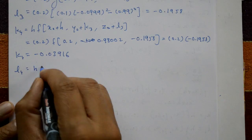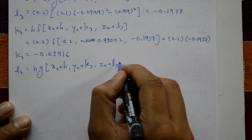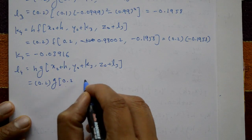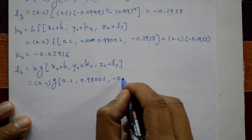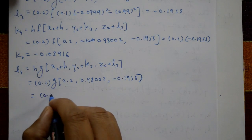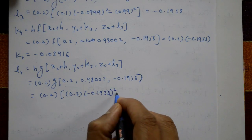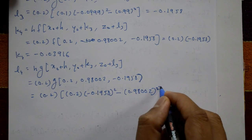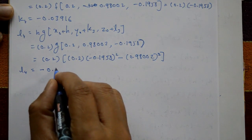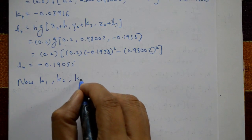l4 = h·g(x₀ + h, y₀ + k3, z₀ + l3). Substituting the same values with g(x, y, z) = xz² - y², we compute and get l4 = -0.1905.